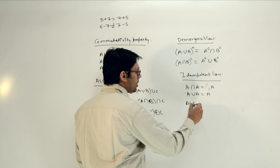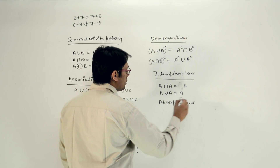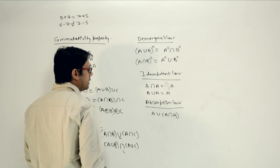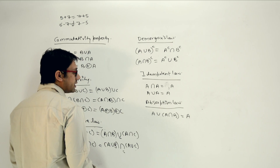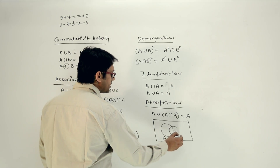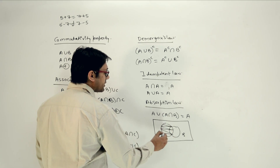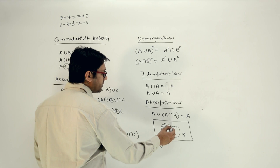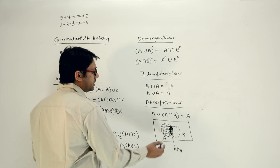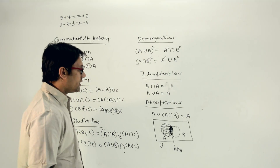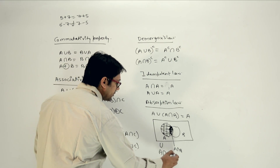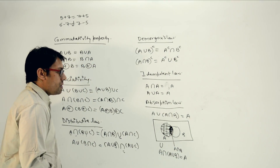The next is the absorption law. If we do A union (A intersection B), it can be written as A itself. Using a Venn diagram: this is the universal set, this is set A, this is set B. The complete set A is A, and A intersection B is the overlapping region. So A union (A intersection B) covers only set A, which is why it equals A. Similarly, A intersection (A union B) is also equivalent to A.